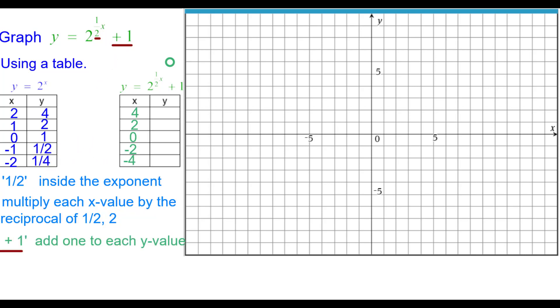The plus 1 affects the y values. We need to add 1 to each y value. So starting with the 4 we'll add 4 and 1 and get 5. So we'll plot the ordered pair 4 comma 5. Go ahead and finish these values here. Plot the points. Draw the graph. Press pause to do this. Resume when you're ready.